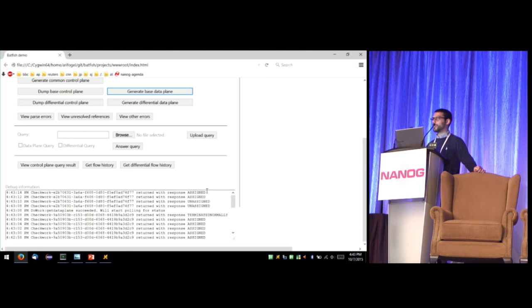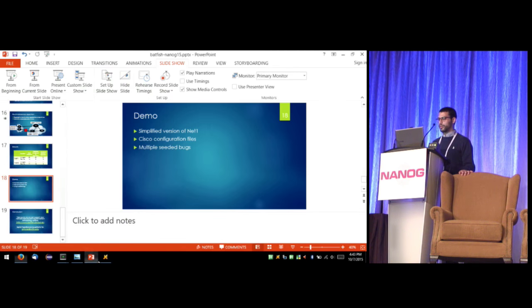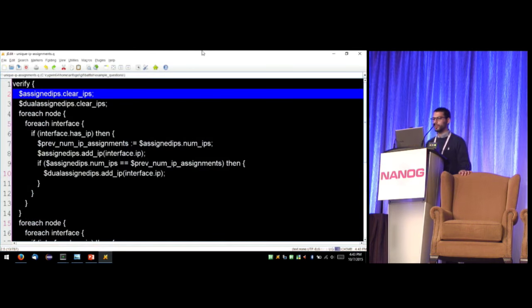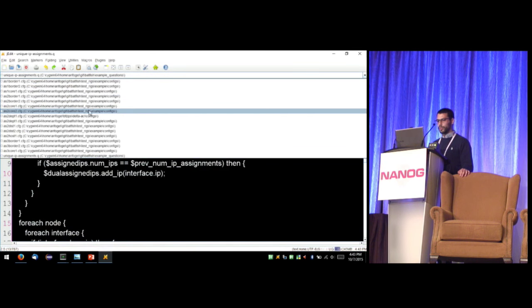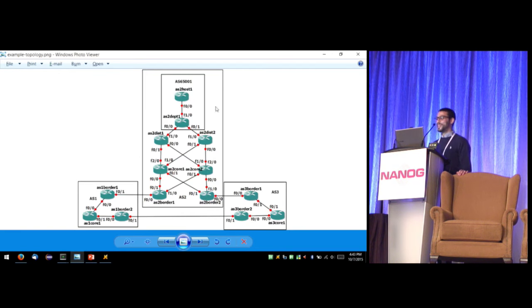Now in addition to being able to check forwarding properties on a single network, we can also look at forwarding properties related to the difference between two potential versions of a network. So once this is done, we're also going to generate another data plane, which is another set of forwarding tables, which is going to be representative of the same network but with one configuration file modified. And then after that, we're going to try to see what the difference is in reachability between those two versions of the network.